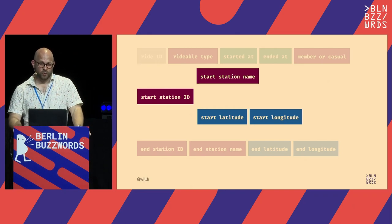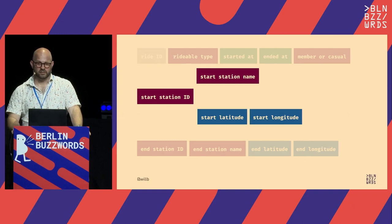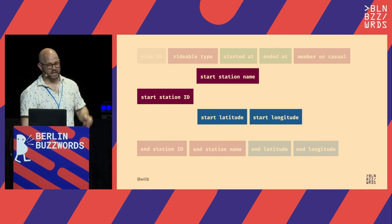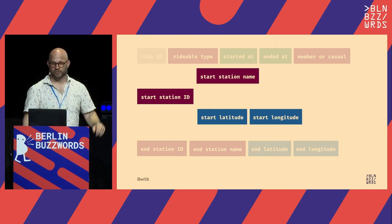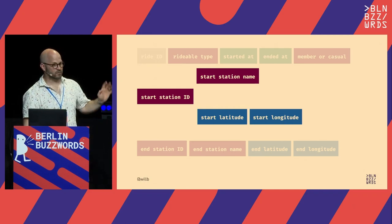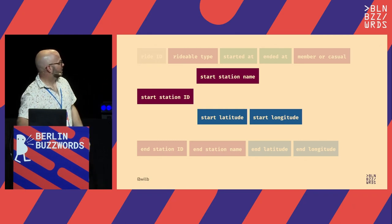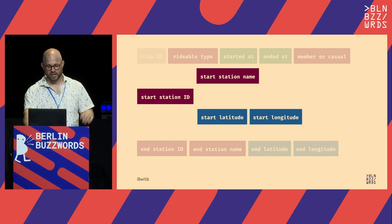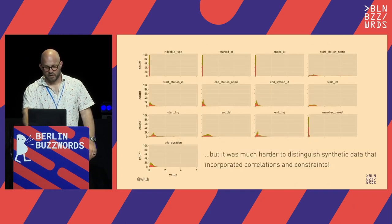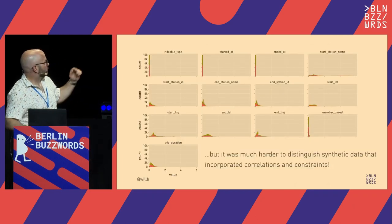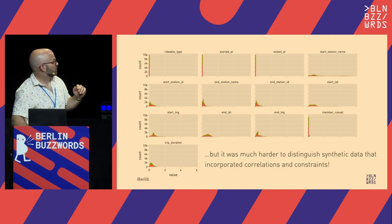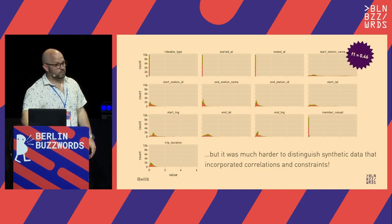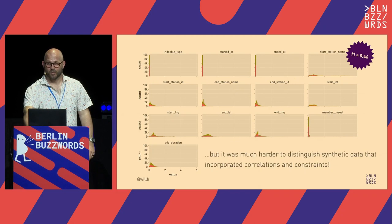If we incorporate these insights into our synthetic data — making the end time always after the start time, looking up the station name based on the station ID, and looking up the latitude and longitude based on the station ID rather than sampling those — the predictive performance of the model gets a lot worse.